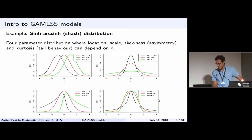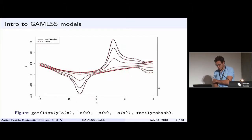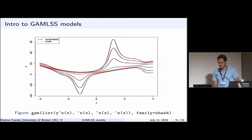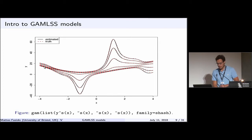The fourth SHASH parameter, delta, controls tail behavior. A negative delta gives fatter tails and a larger positive delta gives thinner tails. You can use this model within MGCV: the family is SHASH and the model formula is a list where each sub-formula models the mean, scale, variance, skewness, and tail behavior — each as a smooth function of covariates.